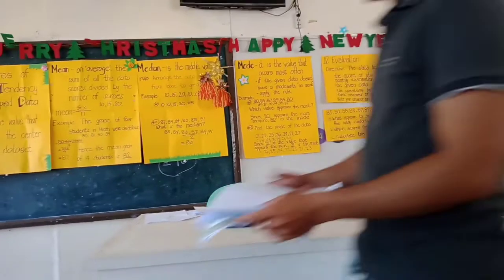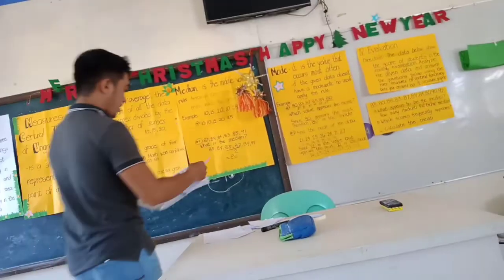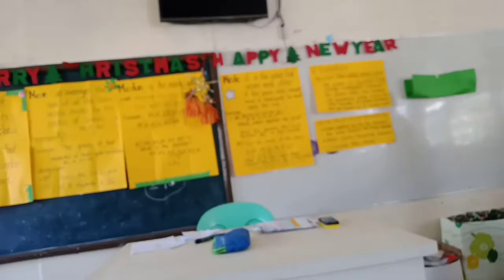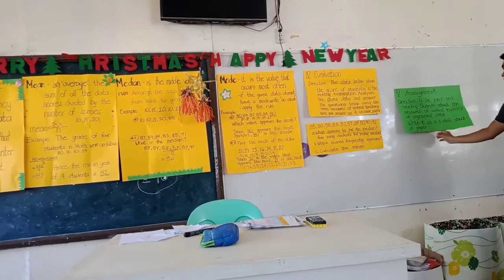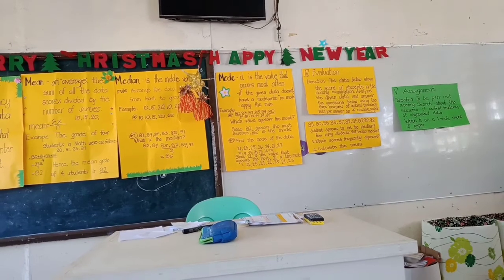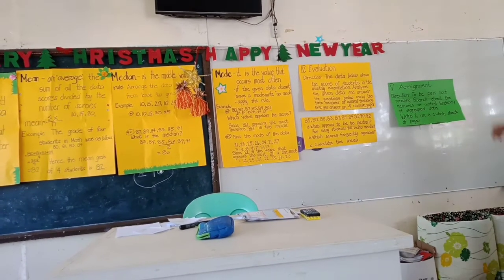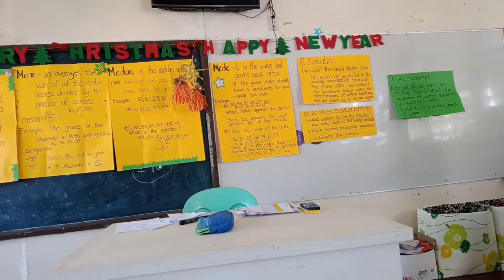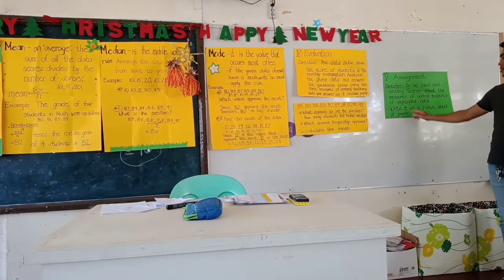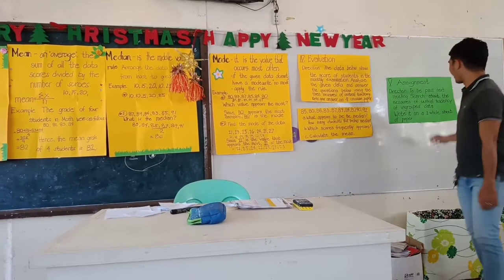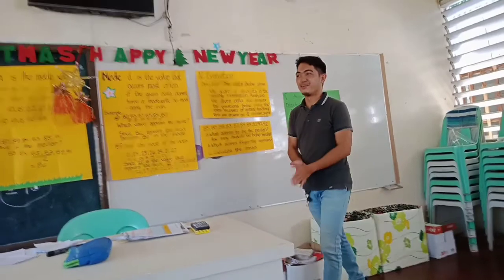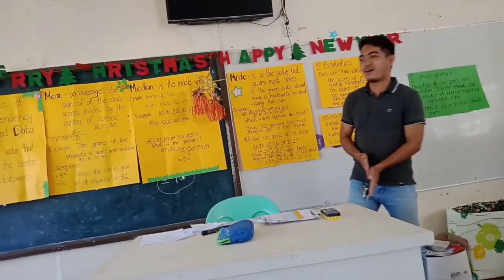Pass the papers. Okay, pass the papers. Thank you. Okay, so I'll check this. Do you have any questions? Yes. Okay, for your assignment, you have to pass this next meeting. You have to search about the Measures of Central Tendency of grouped data. Today we discussed ungrouped data, and in the next meeting we have to discuss grouped data. Write it on a one-fourth sheet of paper. Okay, so that's all for today. Thank you, class. Goodbye!